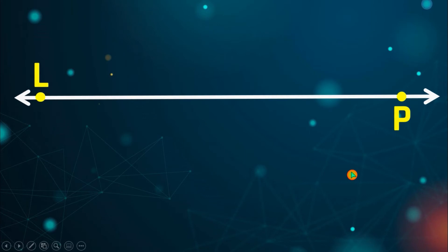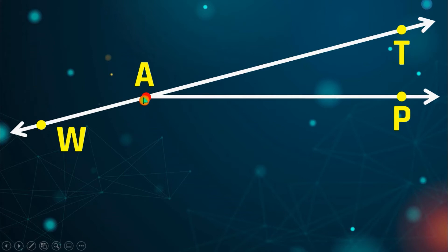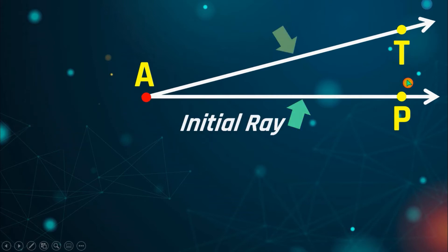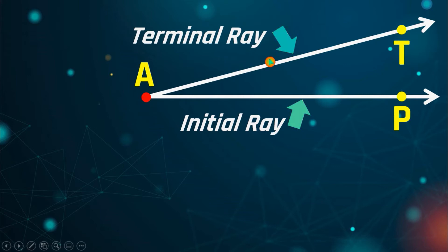Now let's talk about what an angle is. I have here line LP and another line WT. You can see they intersect with each other. If I remove part of it, you will see that we have formed an angle. This ray is what we call the initial ray, sometimes referred to as the stationary ray — it doesn't move, it stays there. This other ray is what we call the terminal ray.